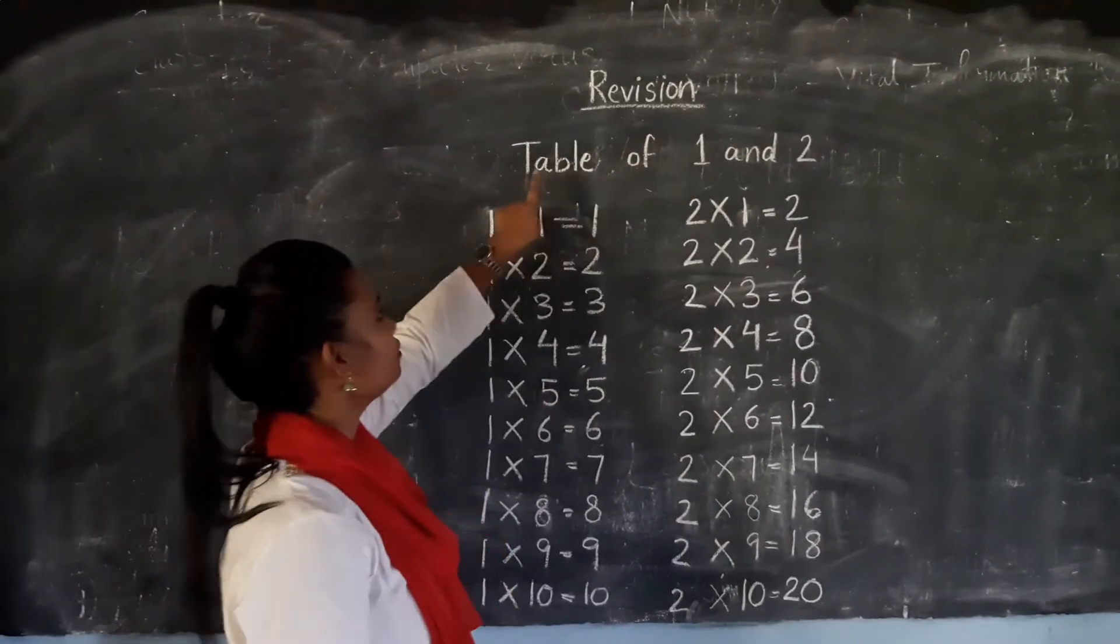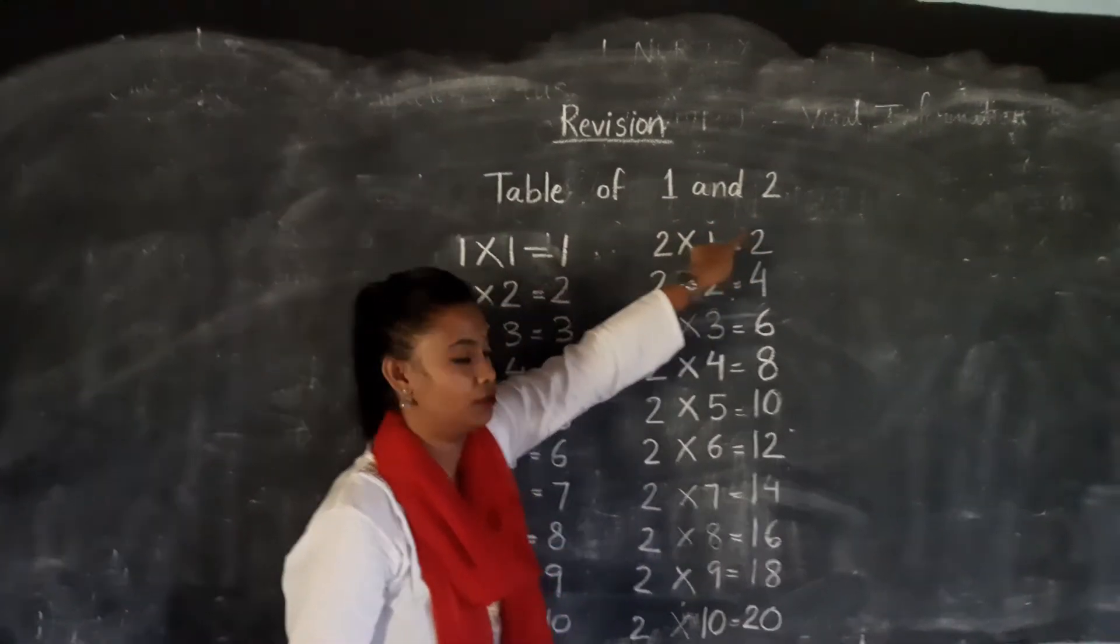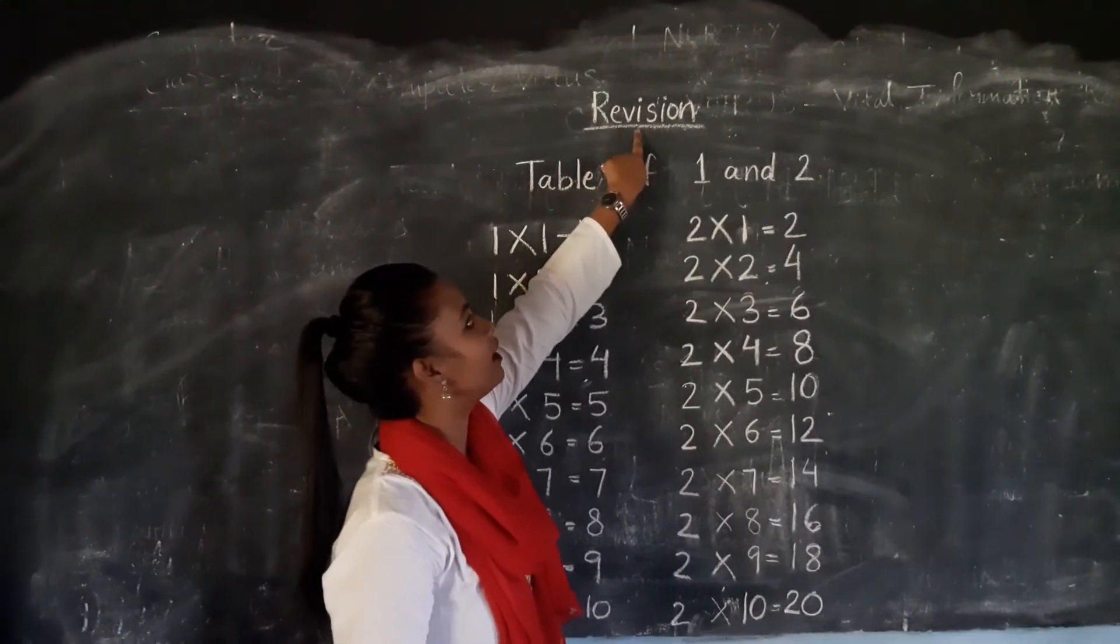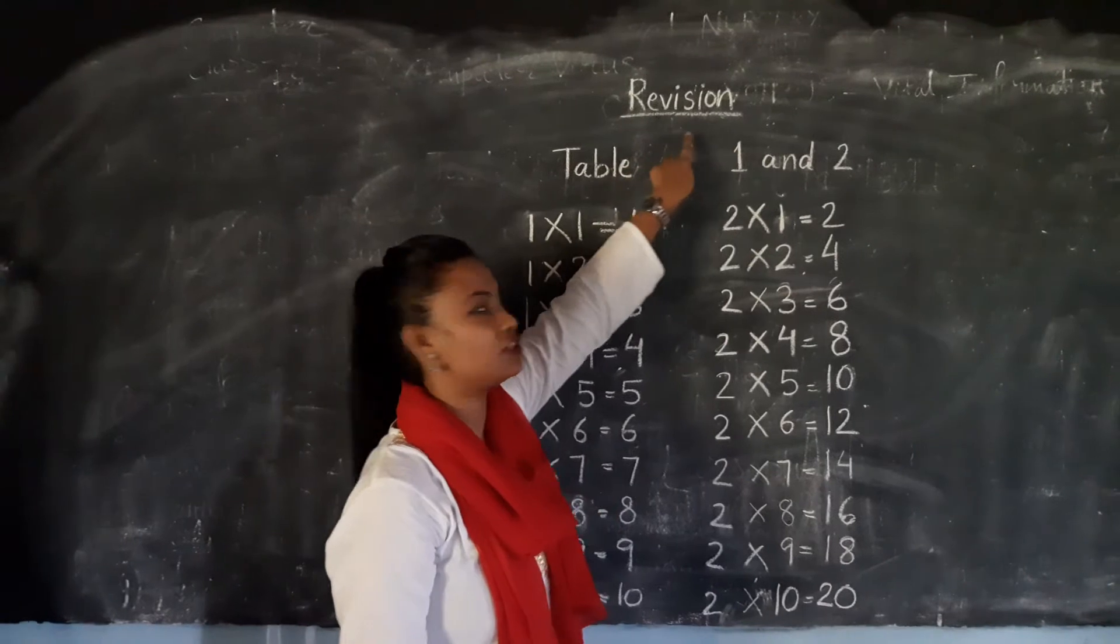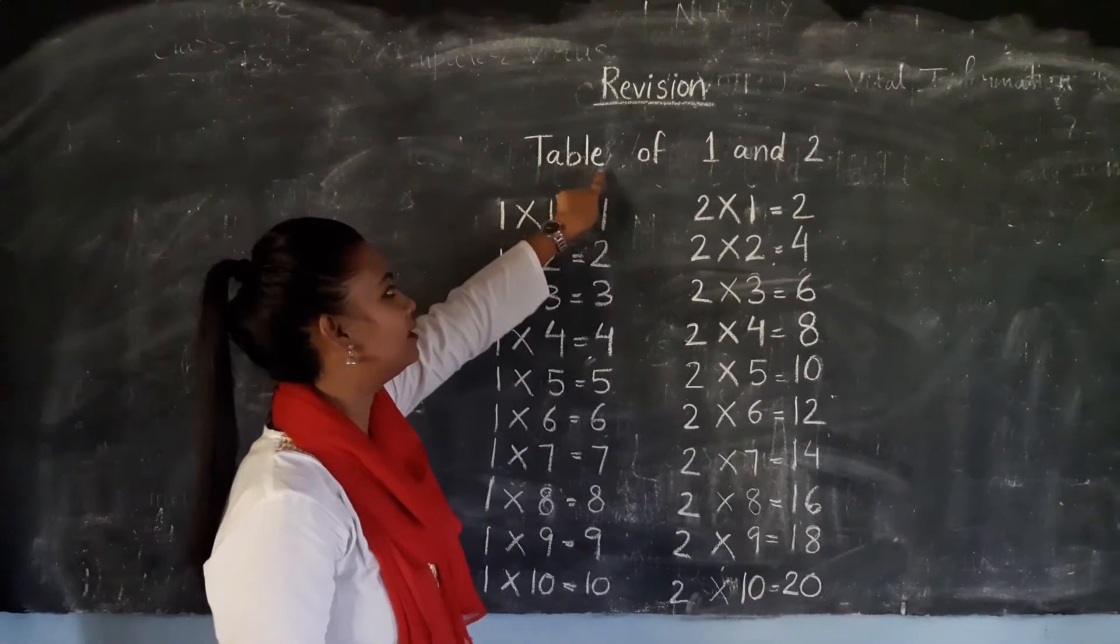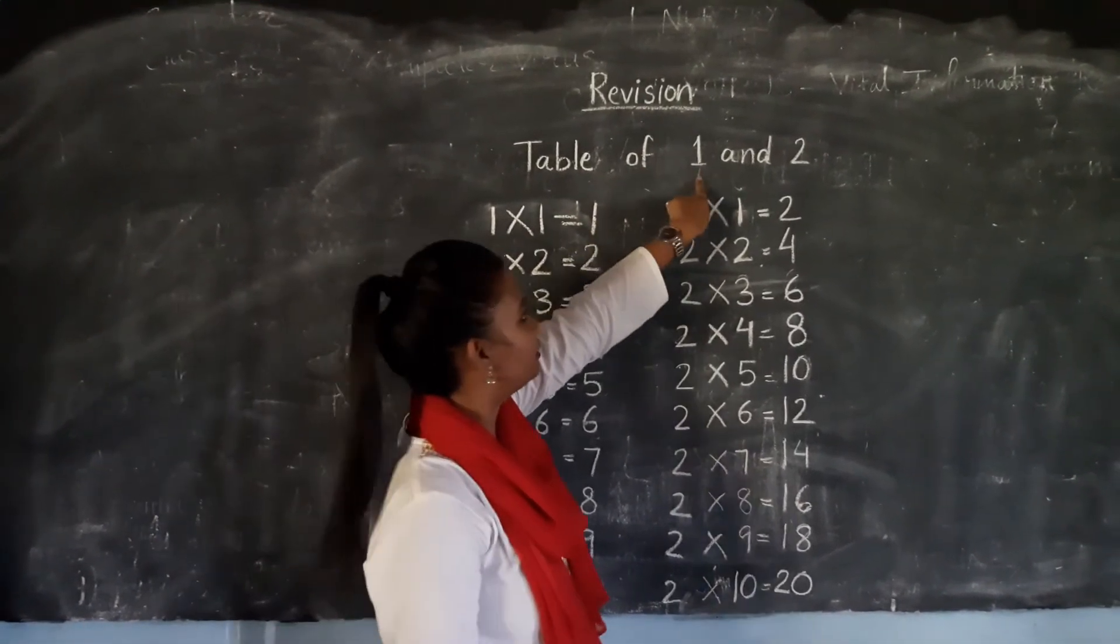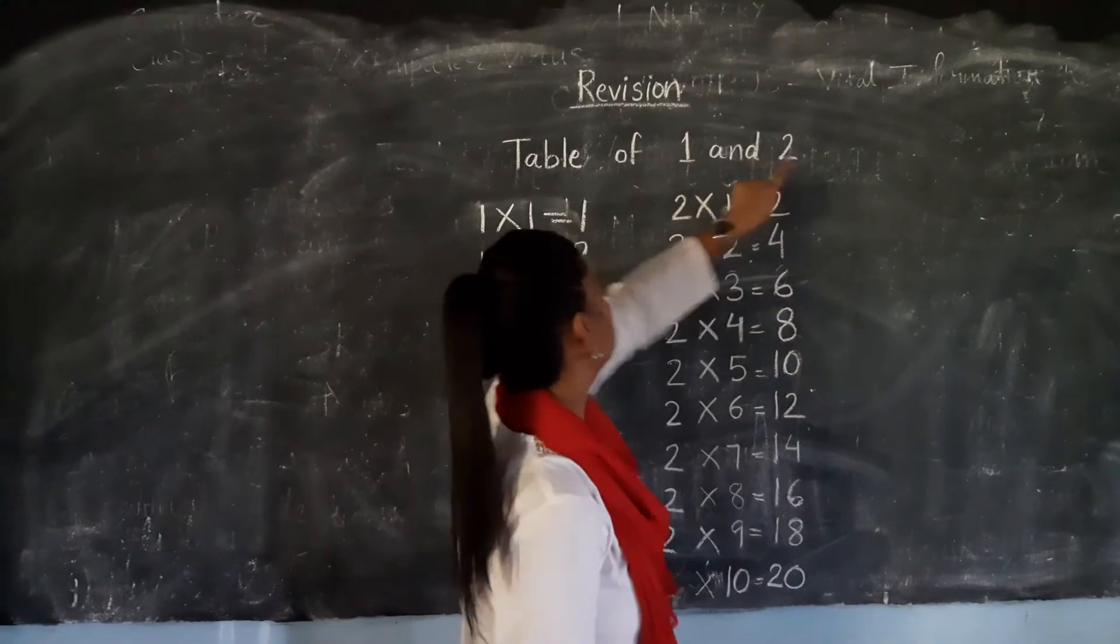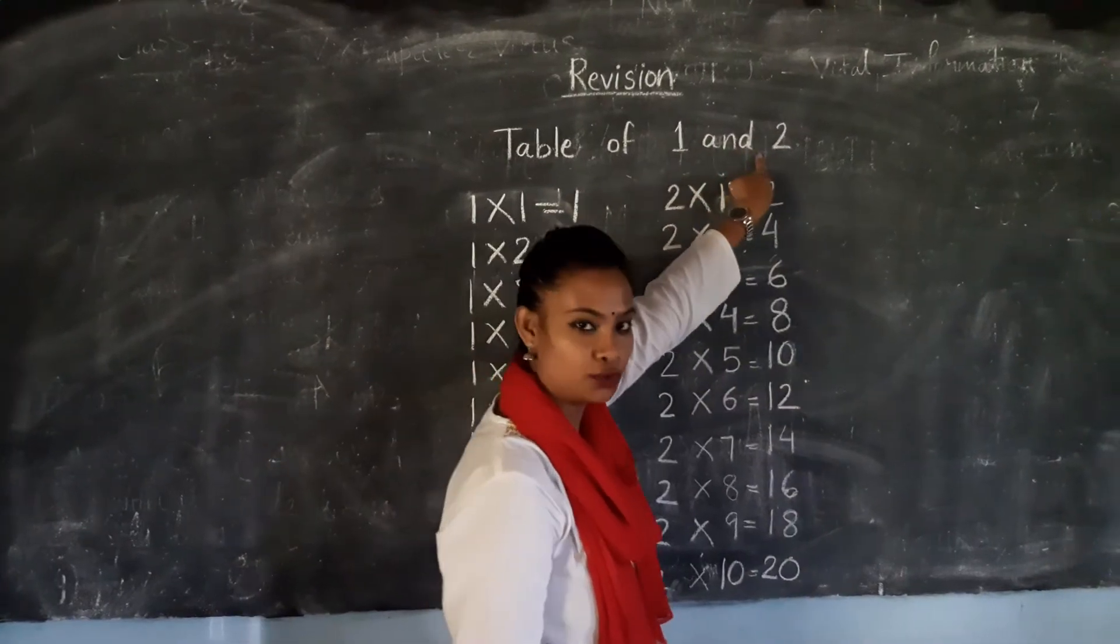today we will be revising table of 1 and 2. Alright? R-E-V-I-S-I-O-N, revision. T-A-B-L-E, table. O-F, of 1. A-N-D, and 2. Table of 1 and 2, okay?